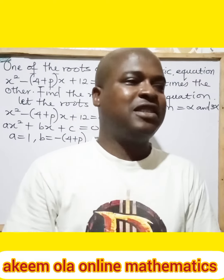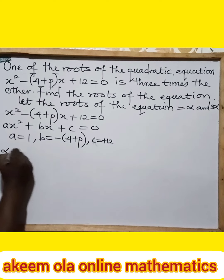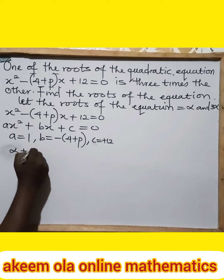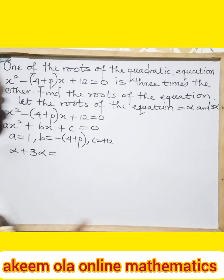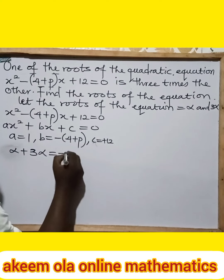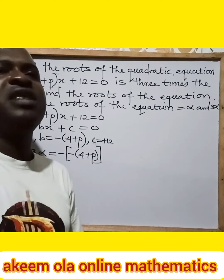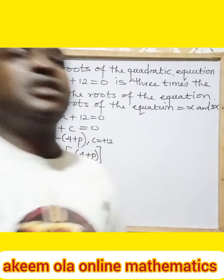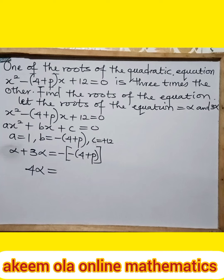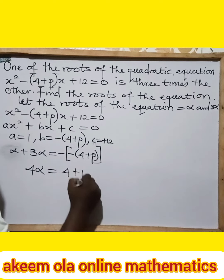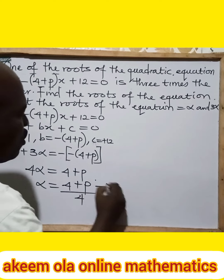We can now go ahead with the sum of roots and the product of roots. For the sum of roots, we are going to have alpha plus 3*alpha, and that sum of roots will always be minus b all over a. Our b is minus(4 + p), so we have minus times minus(4 + p) all over one. This gives us 4*alpha is equal to 4 + p. Therefore, alpha is equal to (4 + p) all over 4. I can call this equation one.